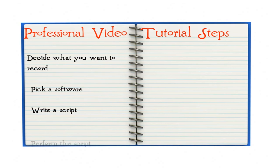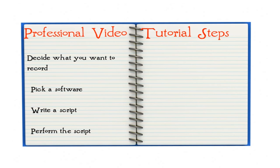Step 4: Perform the script. After you write your script, perform it. You don't have to follow the script verbatim, but you should follow the steps so that you don't accidentally skip over anything. That way, your tutorial will be very professional. Ask a friend to view it before you set it up for sale or release it publicly, allowing them to critique your results. This can help you add in any steps you may have missed.